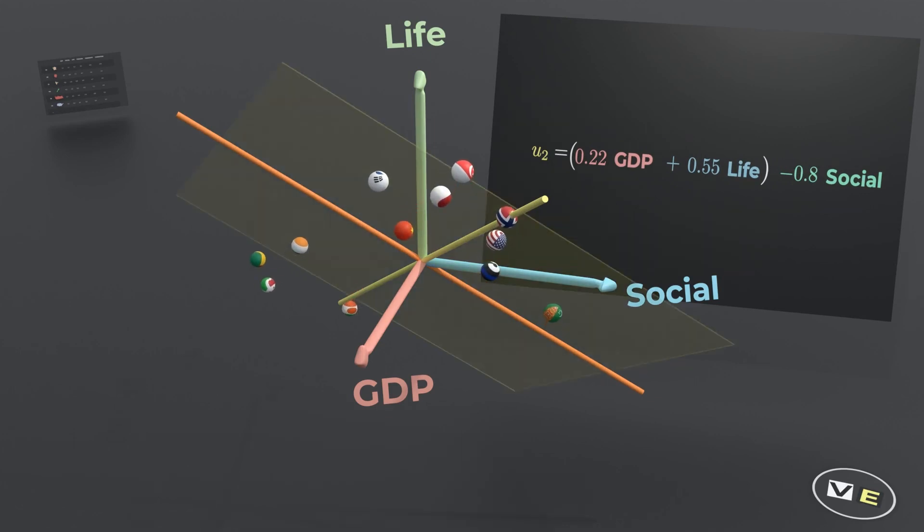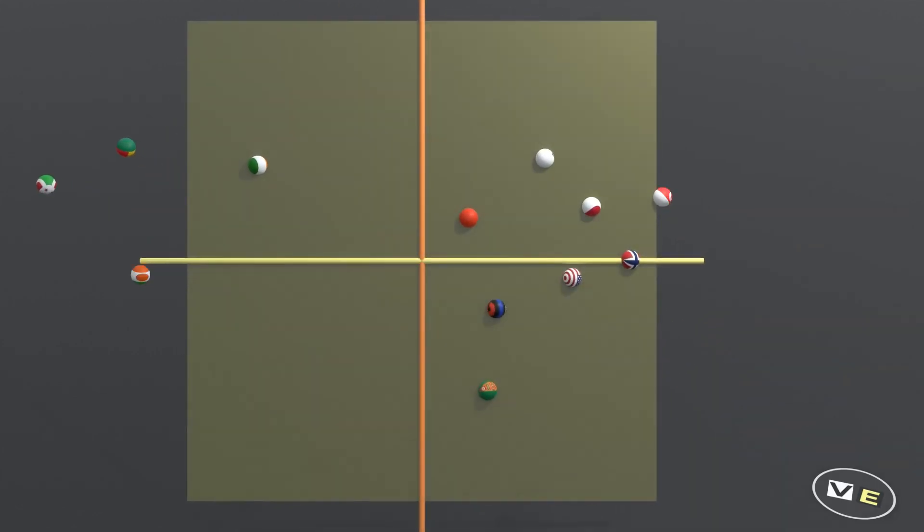If we project the countries on the plane spanned by the first and second component, we find that the happiest countries seem to be the most balanced ones, and countries that are either very high on the balanced axis like Benin or very low like Turkmenistan are generally less happy.